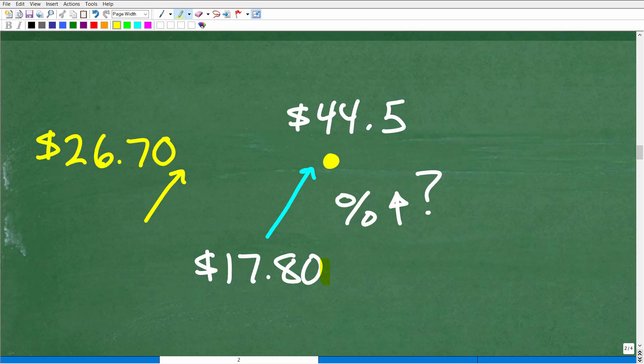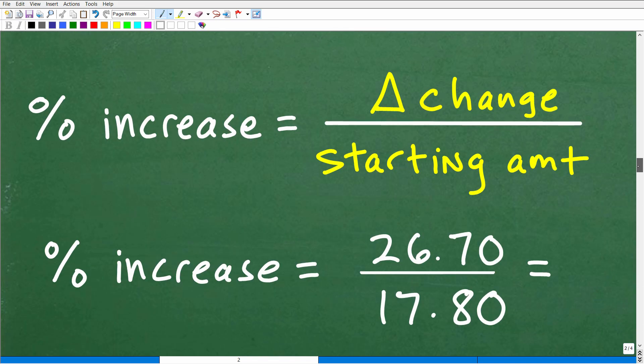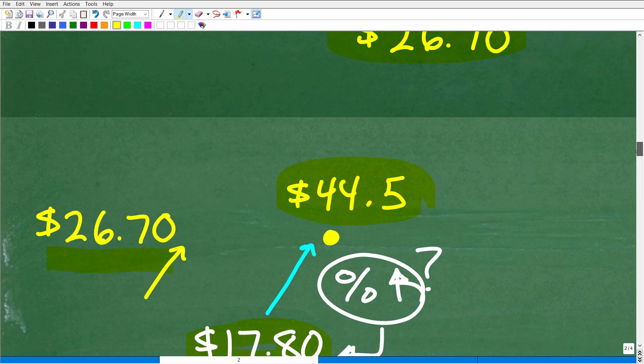We have to figure out how much did this price change. To do that, we simply just need to subtract these two numbers. So 44.50 minus 17.80 is 26.70. We need to take this question and refine it. The percent of change we're looking at is 26.70 compared to 17.80. Here's our model: the current stock price at 17.80, we want to go up $26.70 to get back to our original amount. What is the percent of increase on our stock?